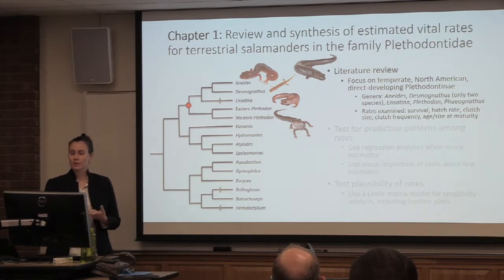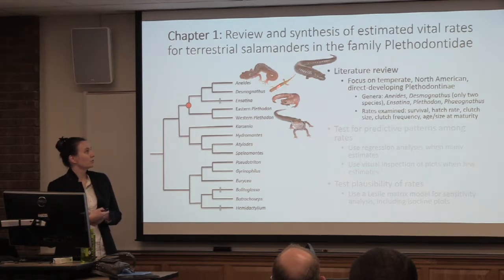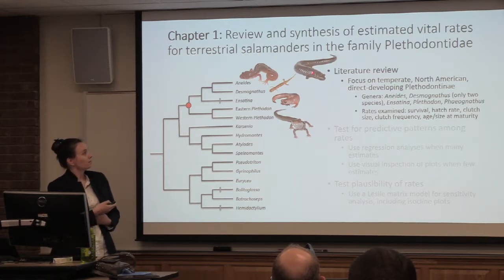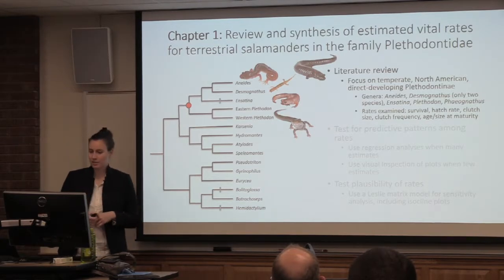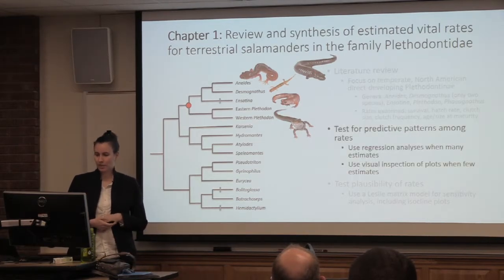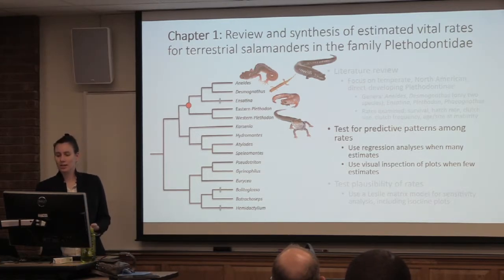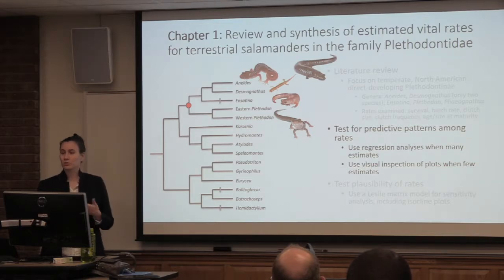The genera we looked at are Aneides, Desmognathus — only two species, both really miniaturized little guys — we looked at Ensatina, Plethodon, and also Phaeognathus, which is this funny looking guy up here, pretty closely related to Desmognathus. And then we tested for predictive patterns among these rates. We used regression analysis when there were a lot of estimates, and visual inspection of plots when there were only a few estimates.